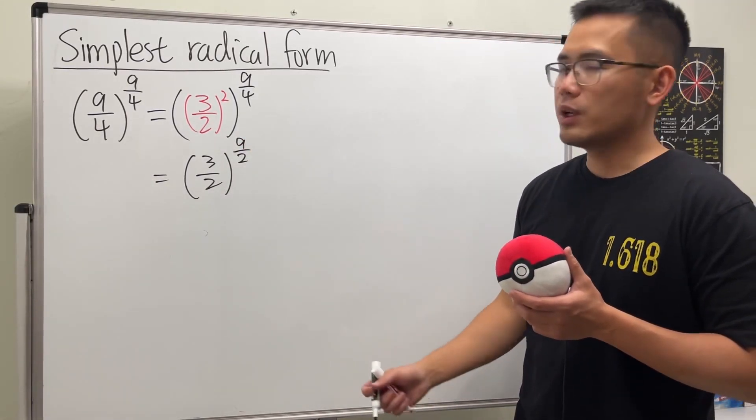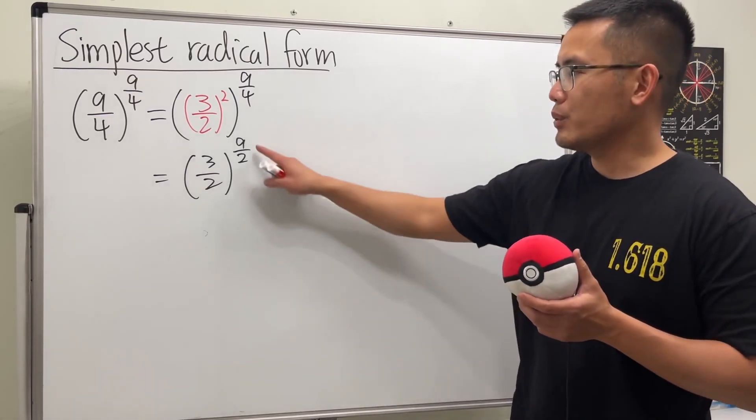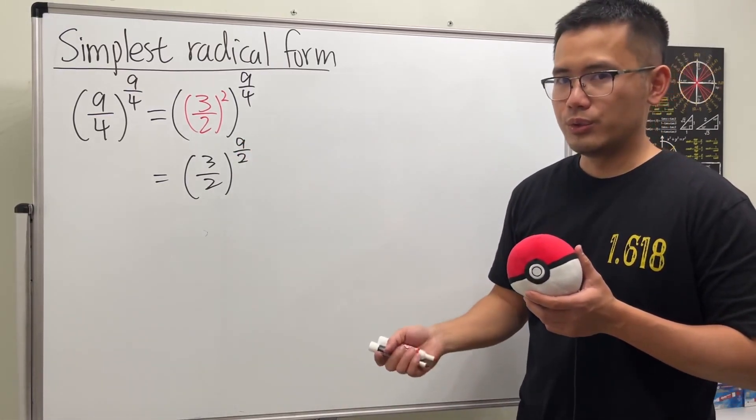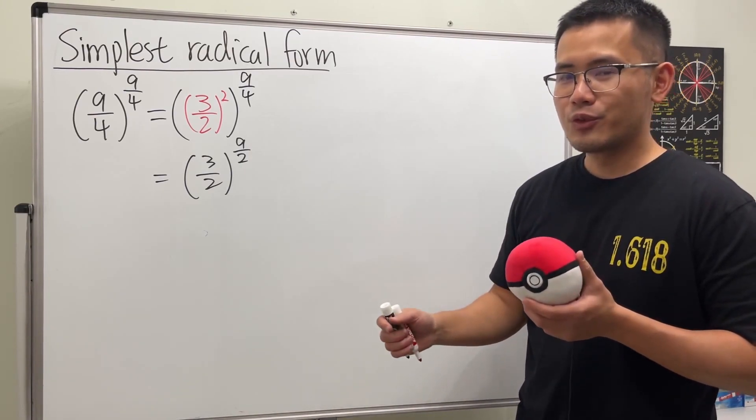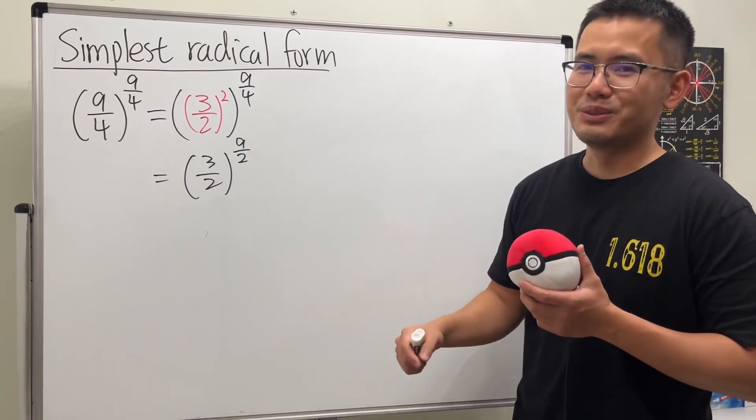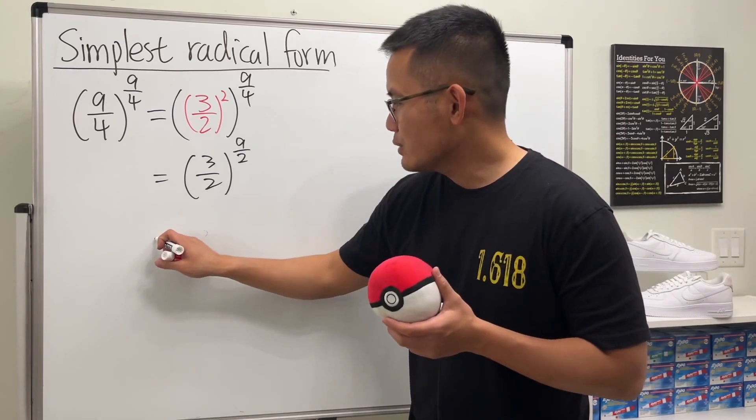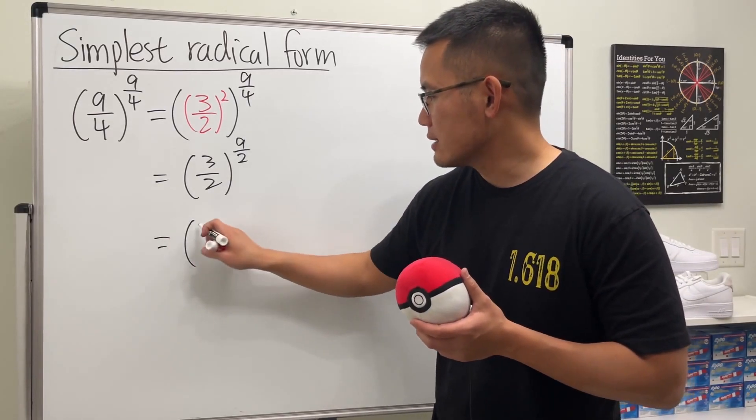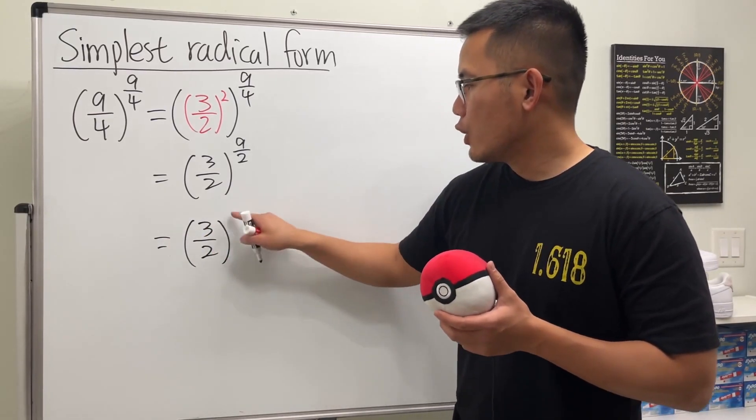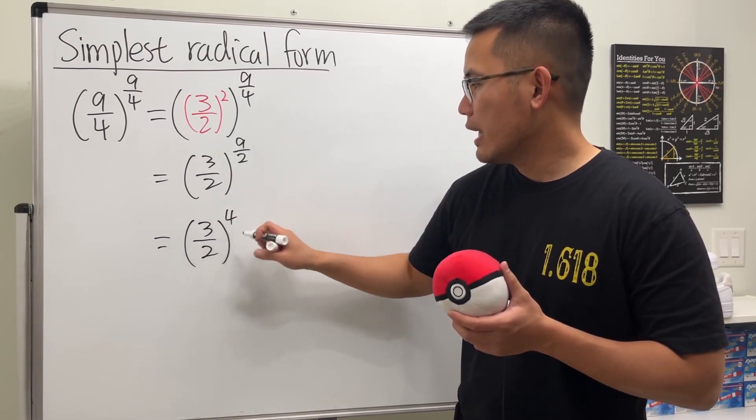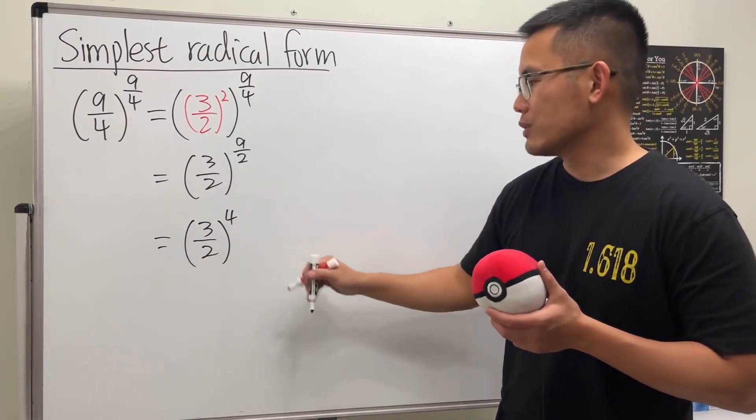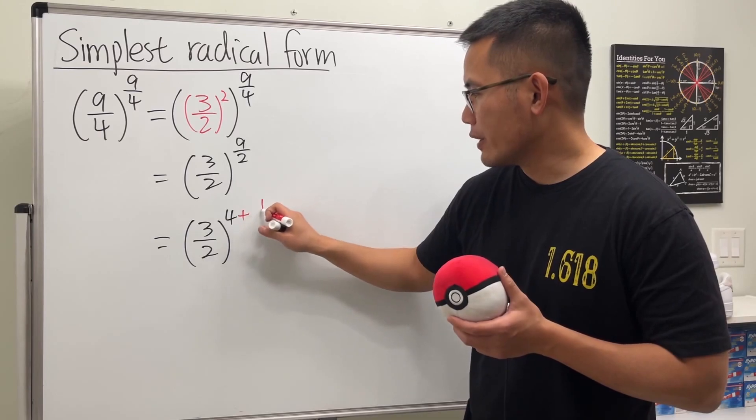Okay, what can we do next? Well, I'll tell you. Let's just go ahead and do 9 over 2, which is 4.5. I know, but let's use fractions. This right here, it's the same as looking at it as 3 over 2 raised to the 4 and a half, right? So it's pretty much 4 plus 1 half.